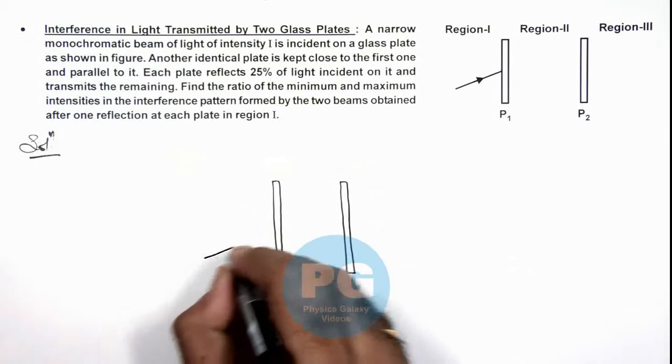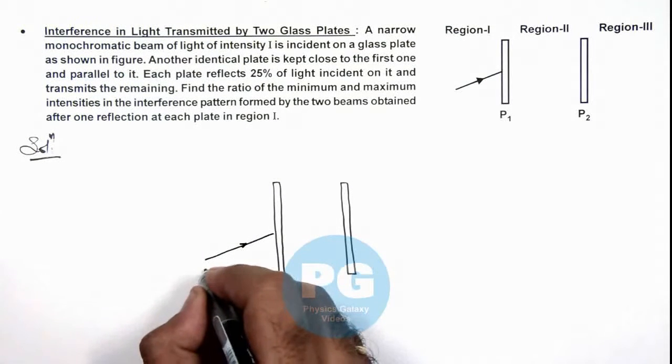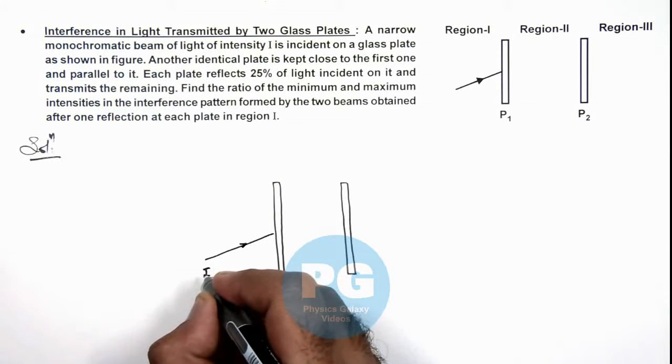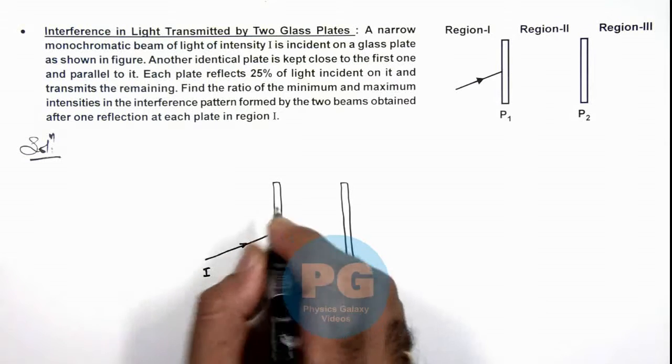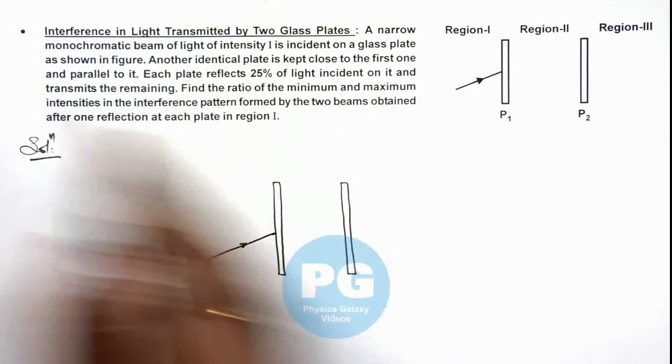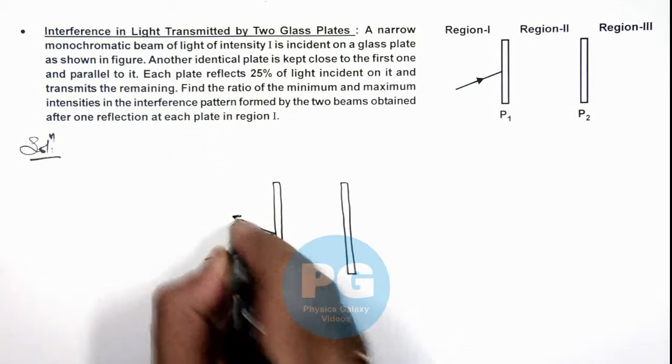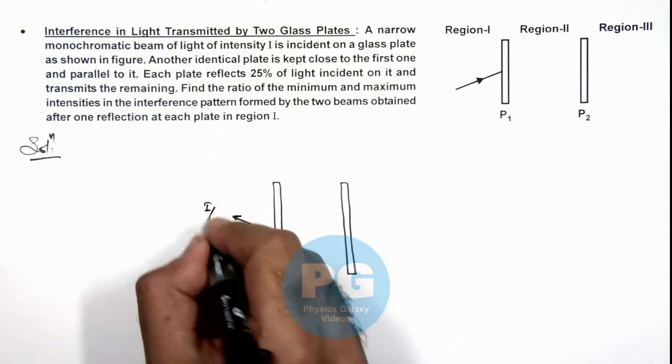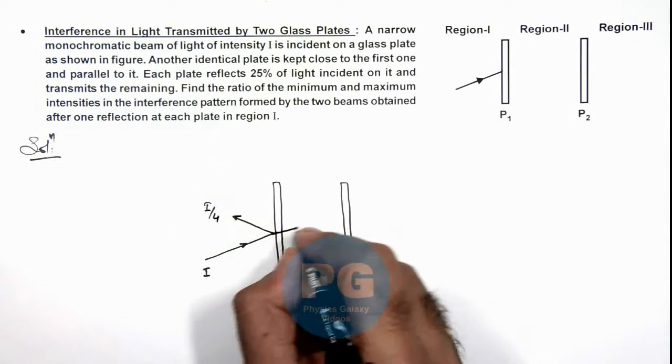If this is the light beam which is incident on it having an intensity I, then in this situation we can see we are given 25 percent of light is reflected, so it'll reflect an intensity I/4 and transmits an intensity